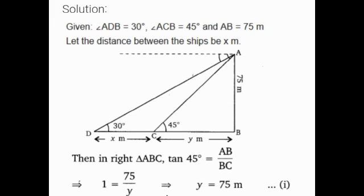Let the distance between the ships be x meters. In right triangle ABC, I can apply tan theta — opposite side by adjacent side — to find the value of BC. On applying tan 45 degrees, which equals 1: tan 45 equals AB by BC, so 1 equals 75 upon y. Cross-multiplying, y equals 75 meters. Let me consider this as my first equation.